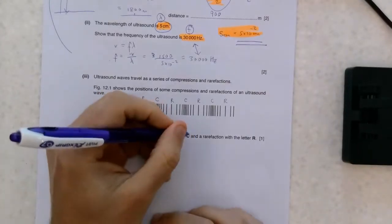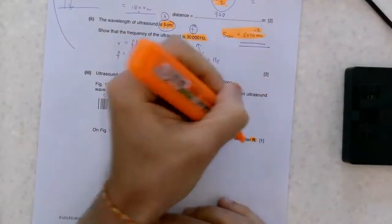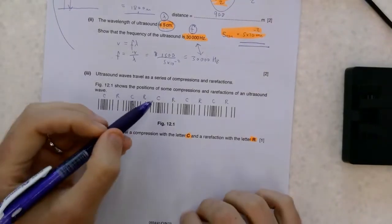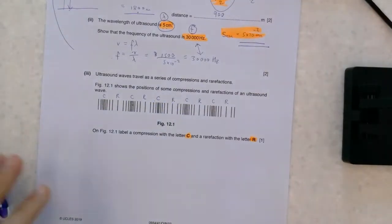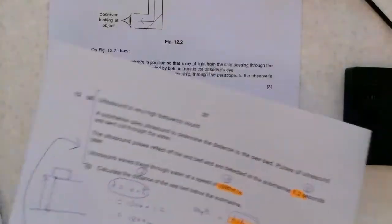Half a wave away is a rarefaction. So, in this question, all you have to do is choose a point with C and a rarefaction with R. To be honest, you can choose any of these C's or any of these R's. I would go for the ones next to each other. And if you fancy showing off, why not do a bunch of them? You're never going to get penalised for doing more here.